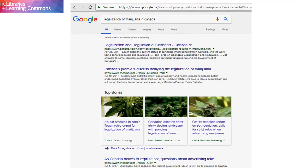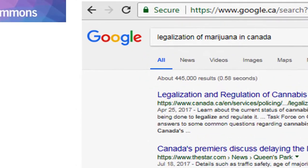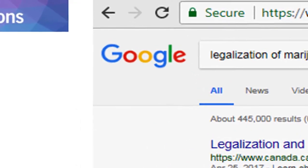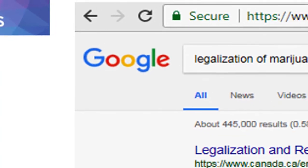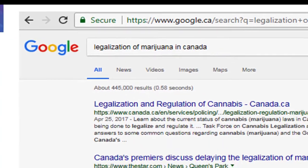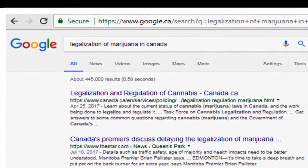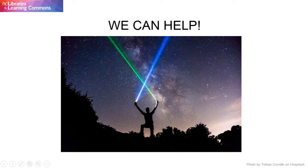If you are doing your research using an internet search engine, it gets a bit harder to tell if the articles that you find are from scholarly periodicals or if they are from popular ones. As a result, we have compiled a list of things to look for when reading an article in order to help you tell if the article that you are reading is popular or if it is scholarly.